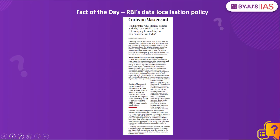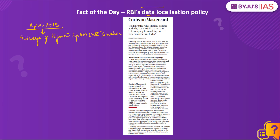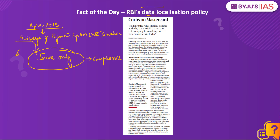Now let us take up the fact of the day — RBI's data localization policy. The Reserve Bank of India has barred MasterCard, American Express and Diner's Club from enrolling new customers as they have not been storing their data in India — that is, they have not complied with RBI's requirements of data localization. In April 2018, the RBI issued a circular called the Storage of Payment System Data Circular, stating that all system providers should ensure that within six months, the entire data — transaction details and all other information collected relating to payment systems — must be stored in a system only in India. They were also required to report compliance to RBI, and no copy or mirroring of data should be stored in any other country.